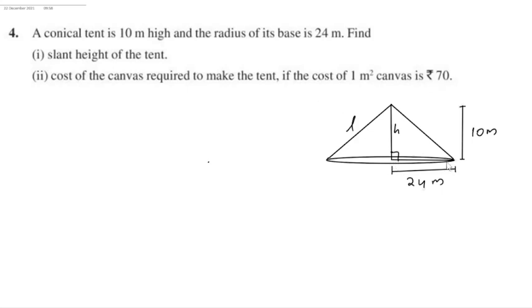The radius of the base of the tent is given as 24 meters and the height of the tent is 10 meters. We have to find the slant height of the tent and also the cost of canvas required to make the tent.